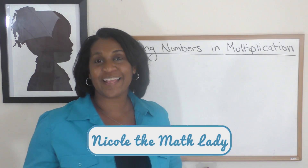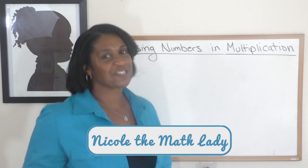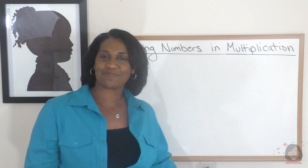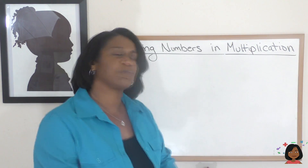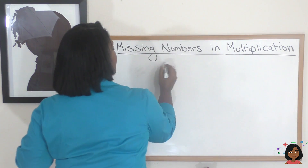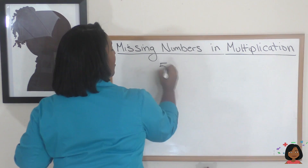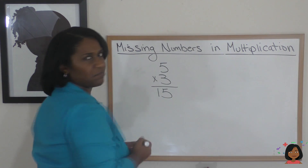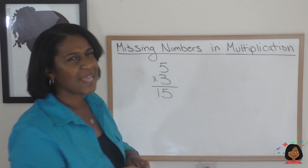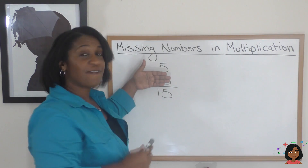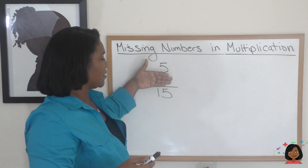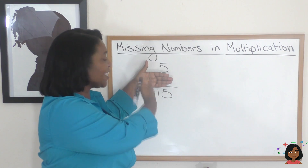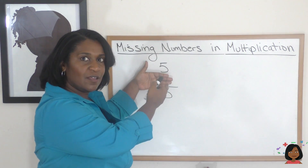Hi, it's Nicole the math lady and we're here to talk about missing numbers in multiplication. Let's start with an easy multiplication example: 5 times 3, which we know is 15. But let's say one of my factors was missing — my 3 was missing. How would I be able to find 3, knowing what you know about multiplication?